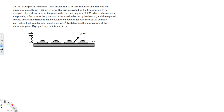We need to find the temperature of the aluminum plate. The equation we are going to use is Q-dot, that is heat transfer, equal to h times A_s times delta T, where h is the heat transfer coefficient.